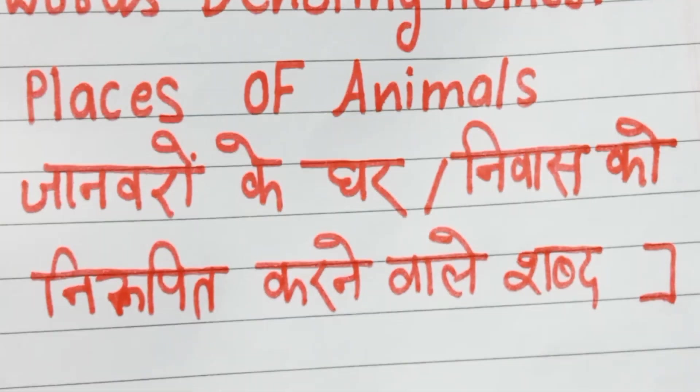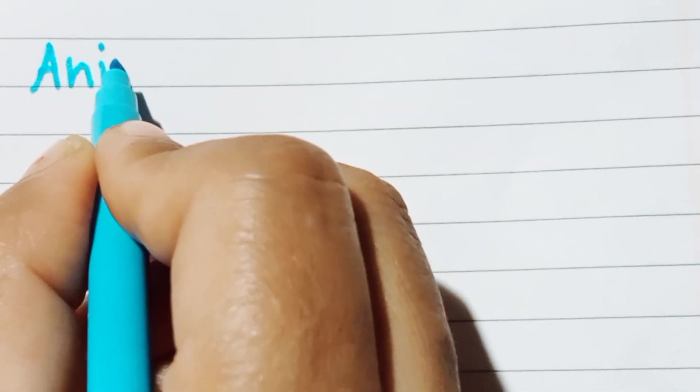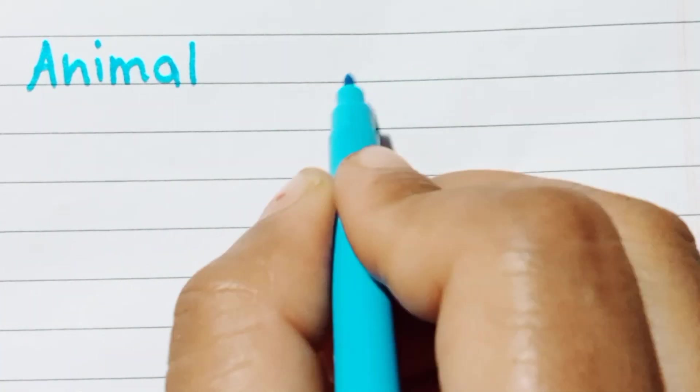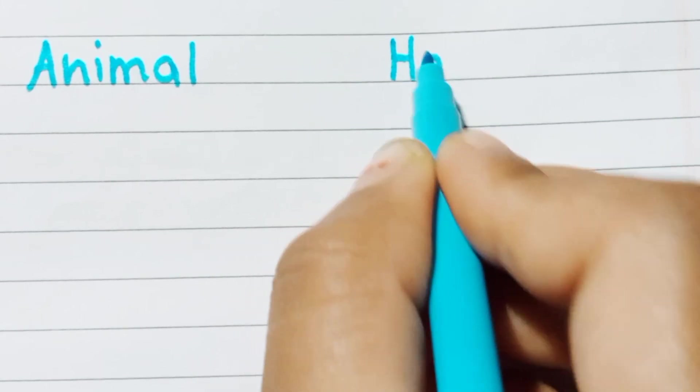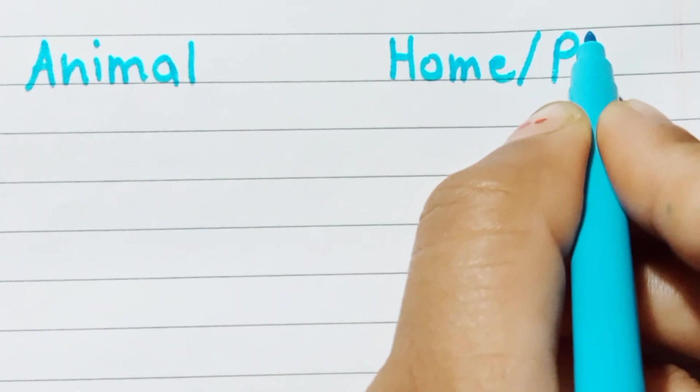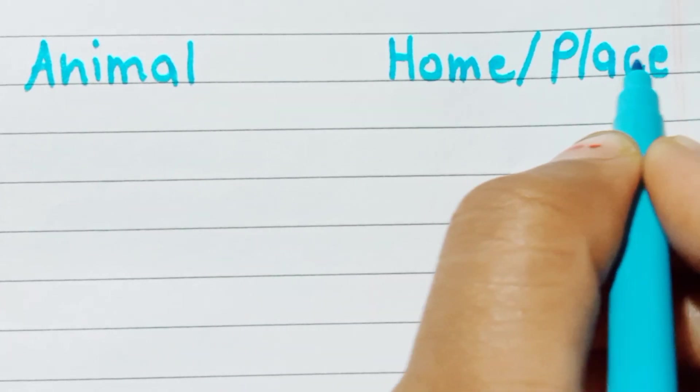Let's begin. Just write down. One side animal, a n i m a l. Second side home or place.